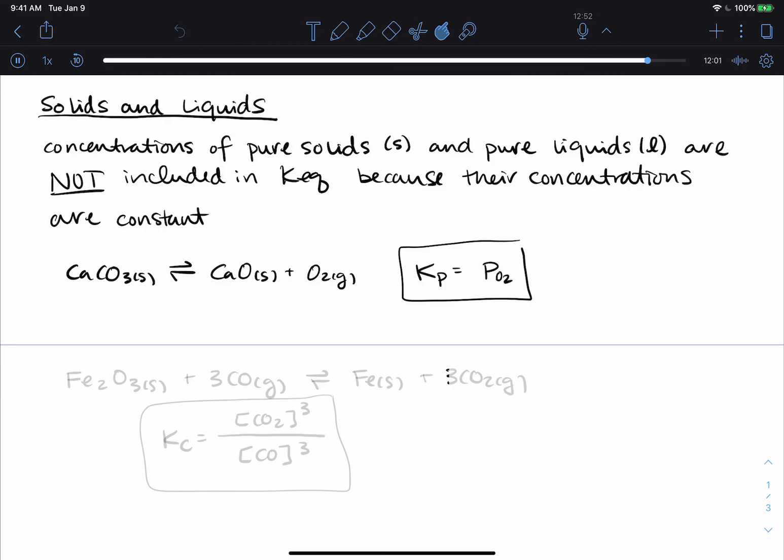Let's do one more that does have a KC expression. This is Fe2O3 solid plus three CO gas in equilibrium with Fe solid plus three CO2 gas. My KC expression on the product side, I've got iron as a solid, so it's just CO2 and that coefficient is three, so I'm going to cube it. On the reactant side, I've got a solid and then CO is a gas, so I can include that. And that is also cubed.